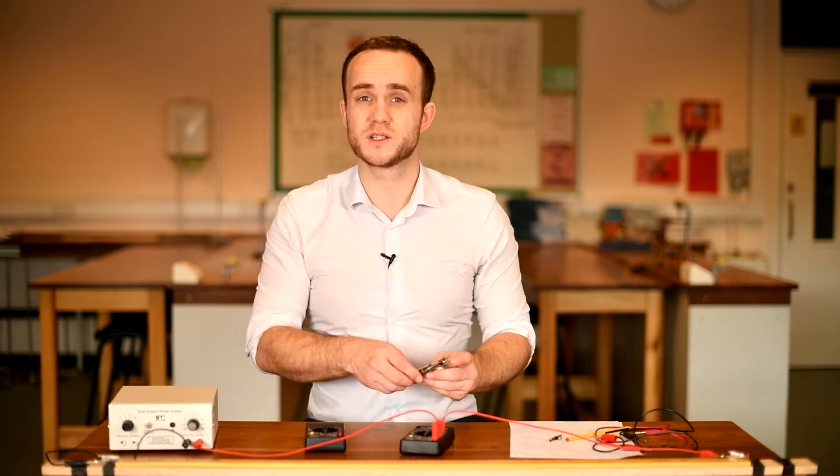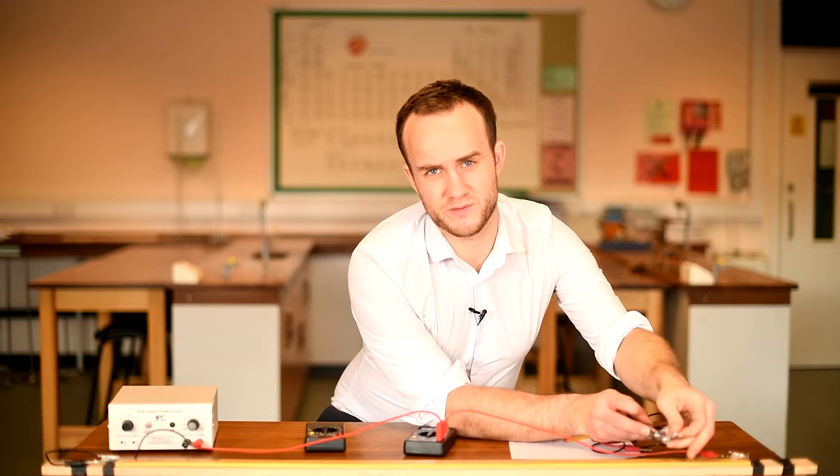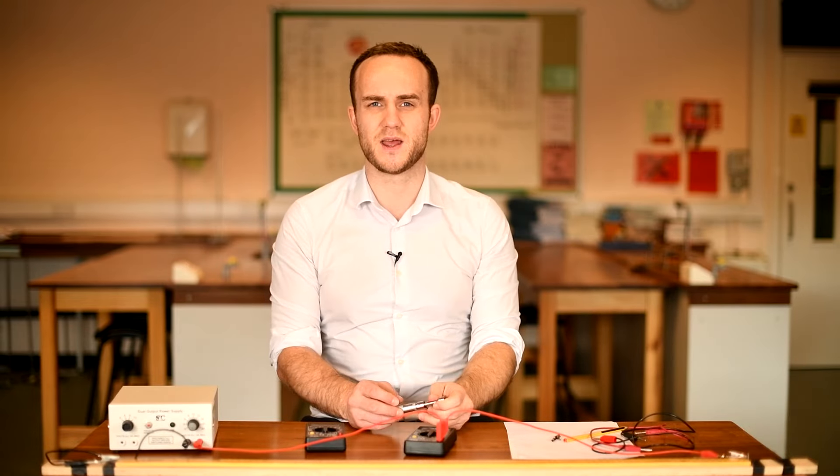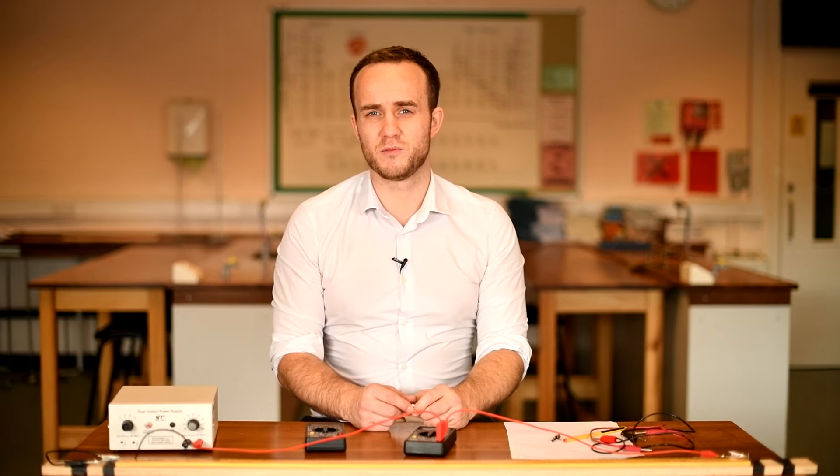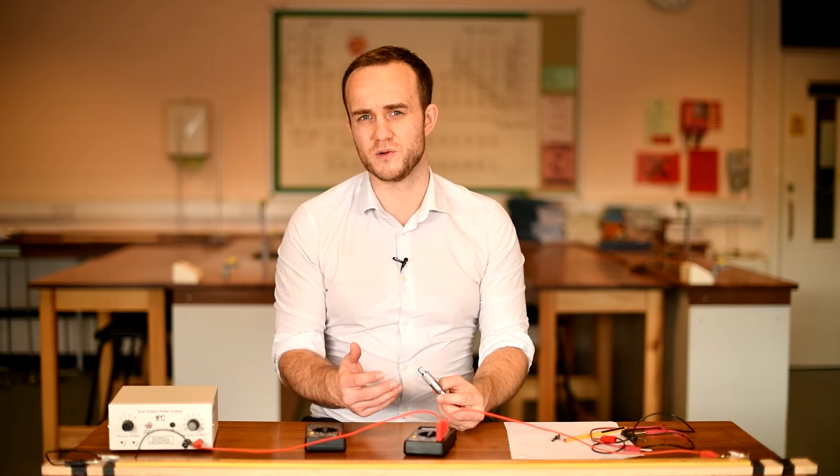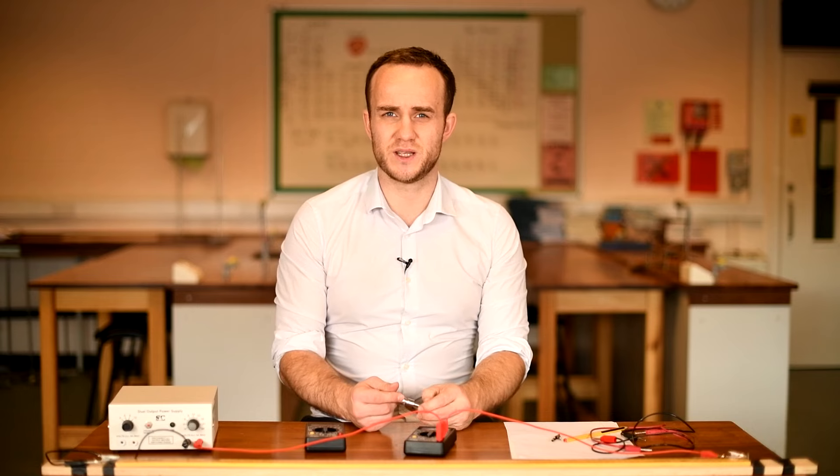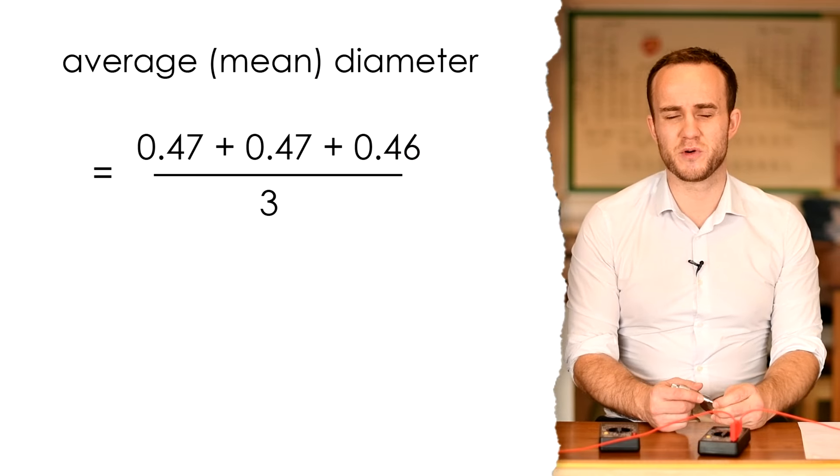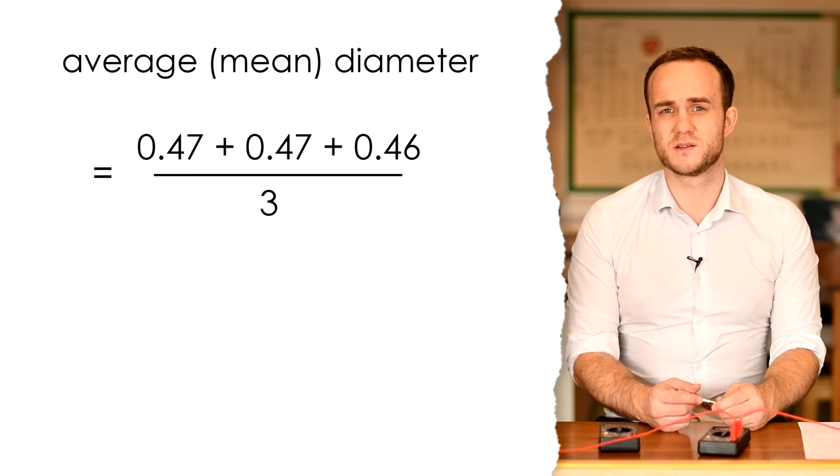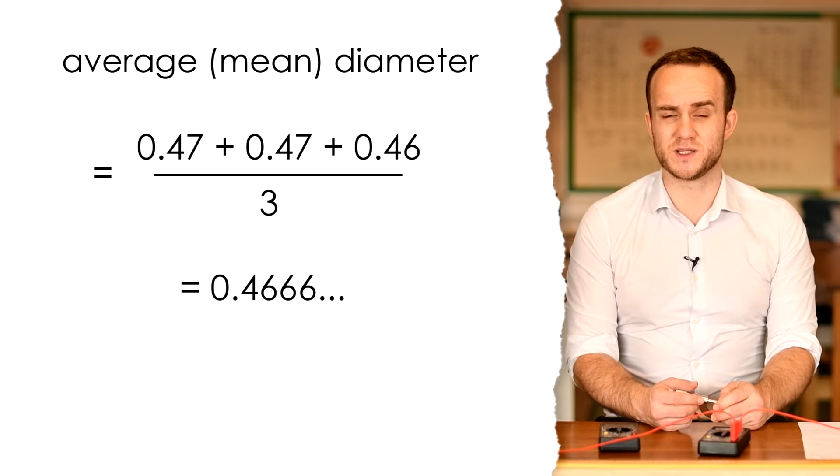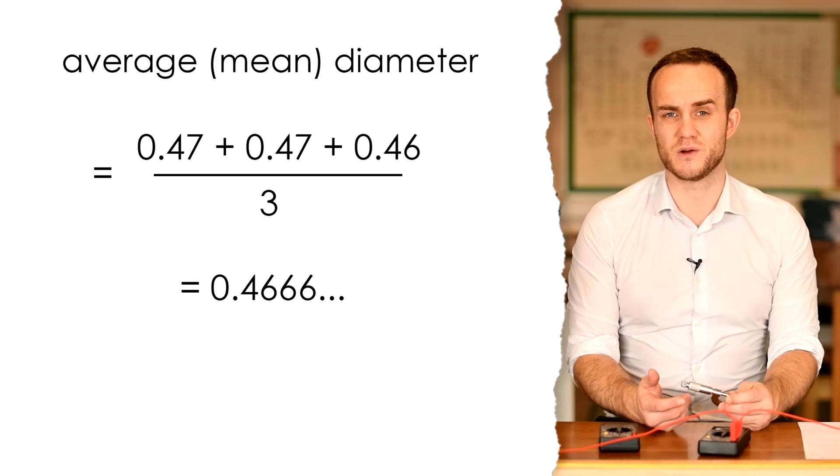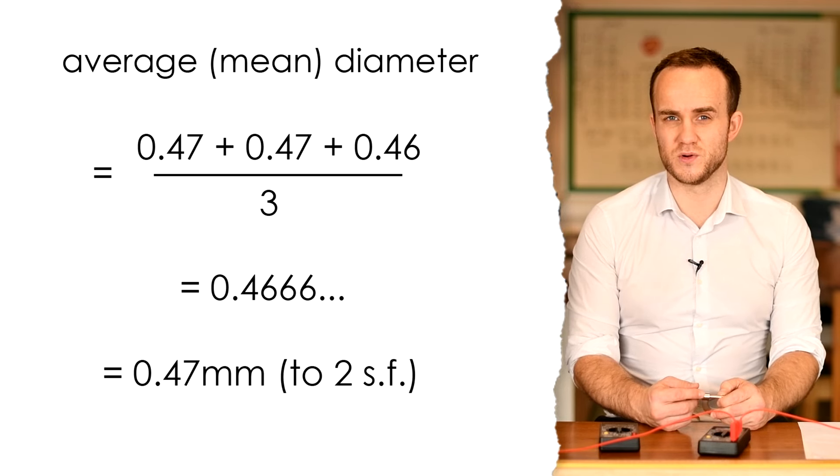Let's check again somewhere else. Same again. Now this one is ever so slightly thinner at that end. That was actually 0.46 millimeters, so my three readings are 0.47, 0.47, and 0.46. Averaging those gives us a number between 0.46 and 0.47. It's going to be 0.46 and another two-thirds, but we can't give an average to a greater precision than the individual reading, so that means it's just going to be 0.47 millimeters.